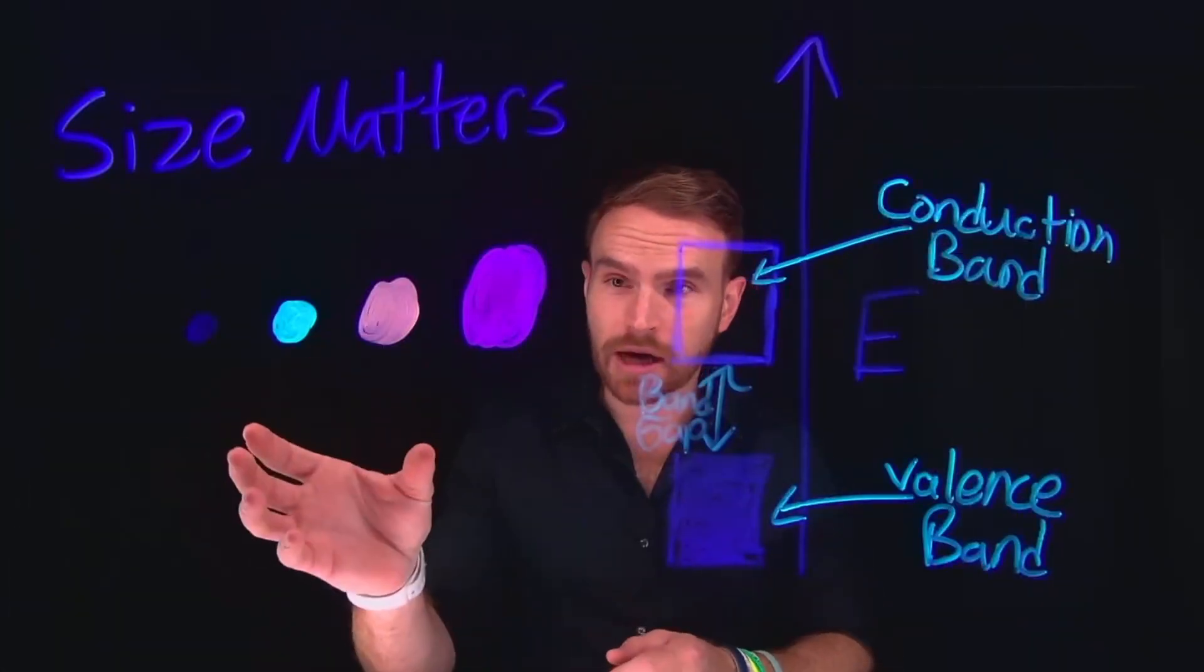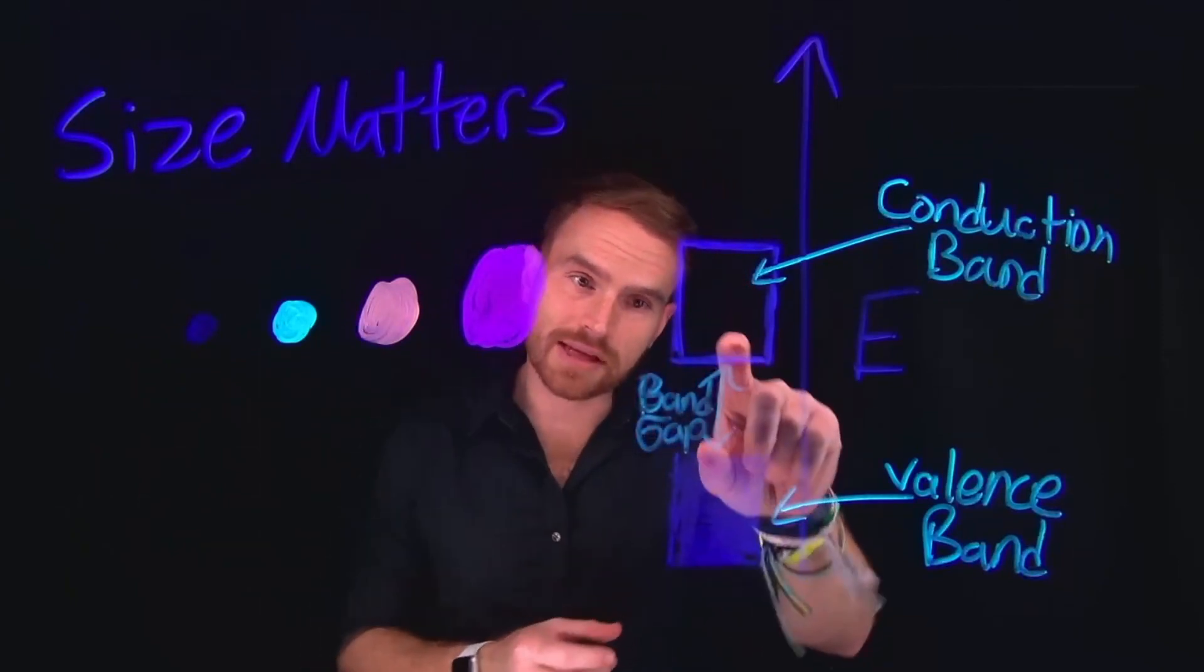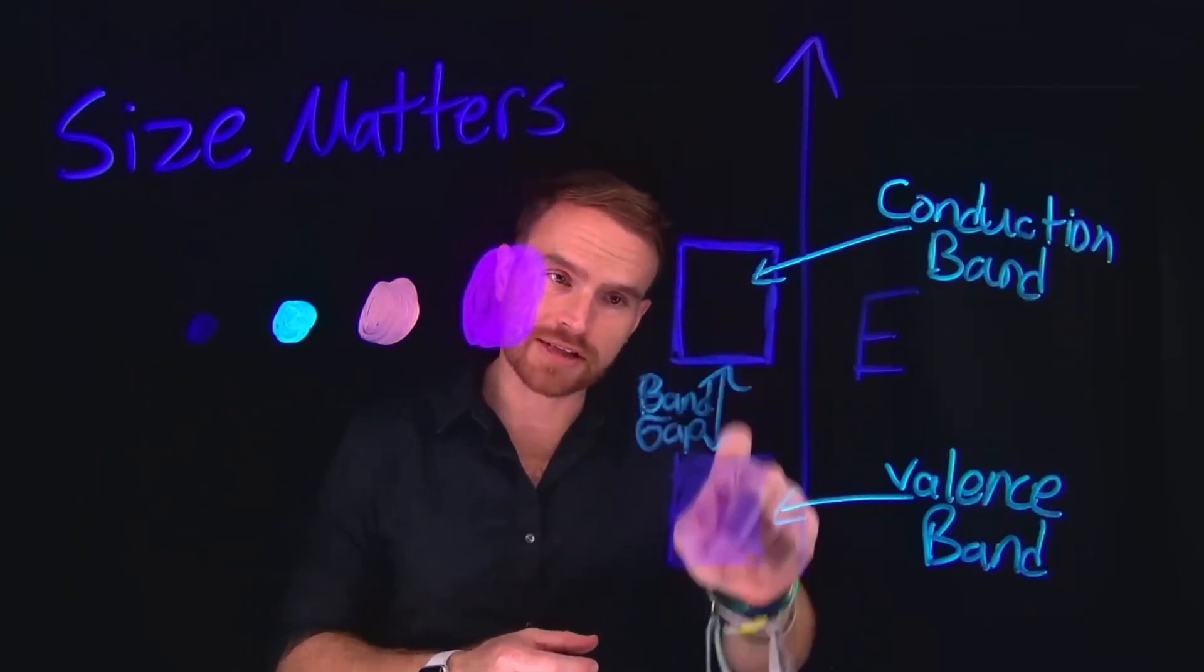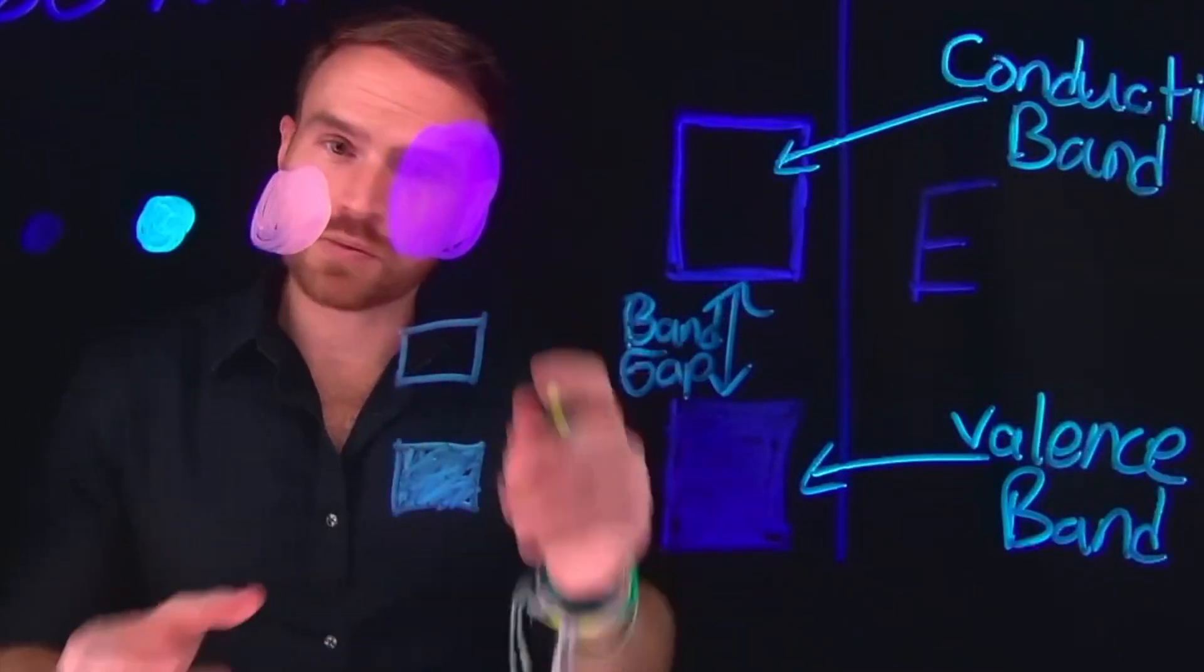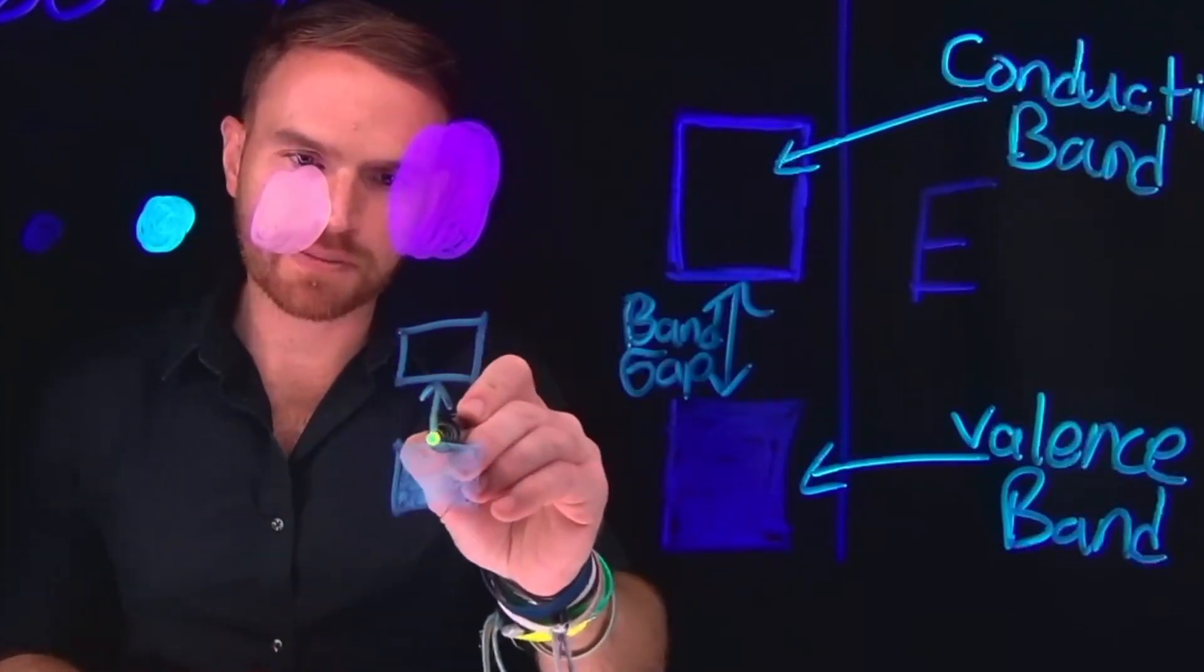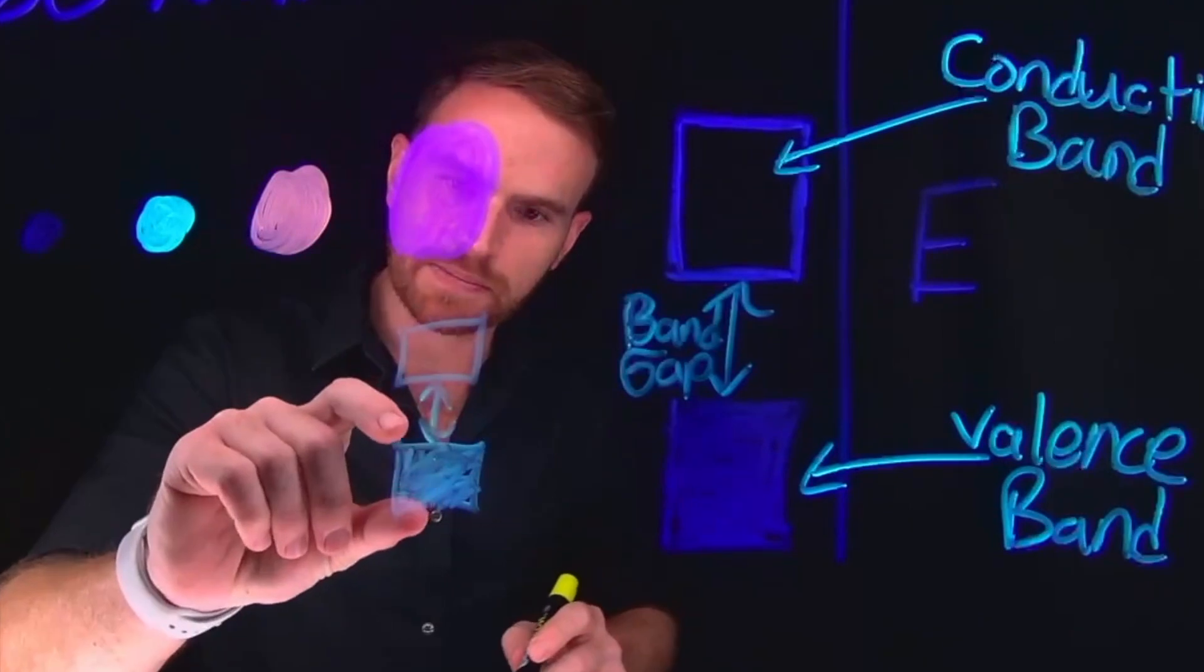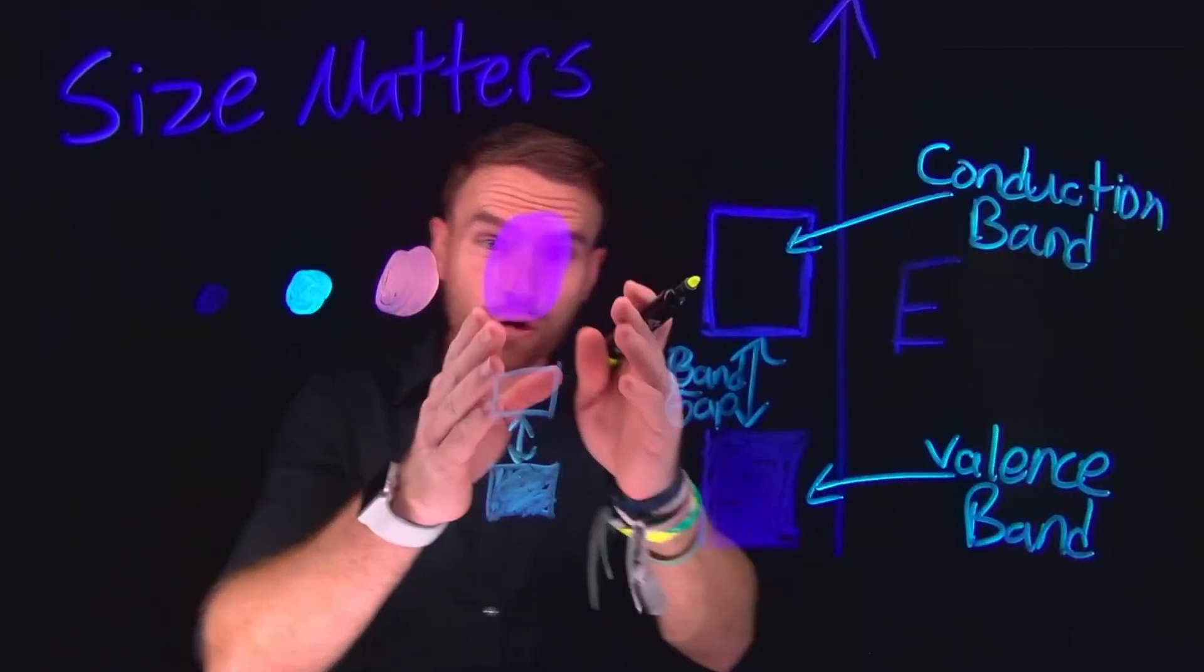However, for things like quantum dots, by simply changing the size of the particles, we can affect the difference in the energy between the valence band and the conduction band. So for larger particles of quantum dots, which are the same material regardless of size, the band gap energy is going to be very small. In other words, the distance between the valence band and the conduction band is very small, and that's for larger particles.